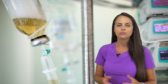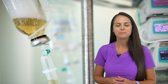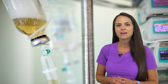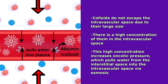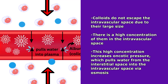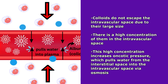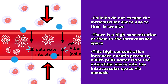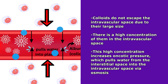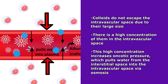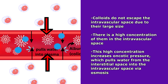How exactly does a colloid achieve this increase of plasma volume? Colloids are very unique because they are big molecules, and because they're so big they don't escape that intravascular space. They can't go through the capillary wall, so there's a high concentration of them within that intravascular space. This increases oncotic pressure, causing osmosis to occur — water flows from the interstitial space into the intravascular space, increasing the volume within that compartment.